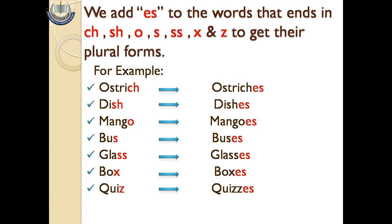For example: ostrich becomes ostriches, dish becomes dishes, mango becomes mangoes, bus becomes buses, glass becomes glasses, box becomes boxes, quiz becomes quizzes.